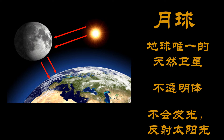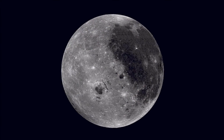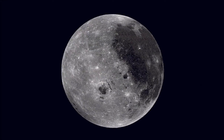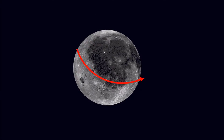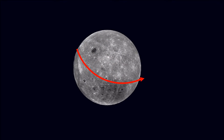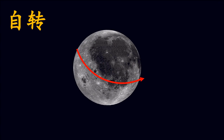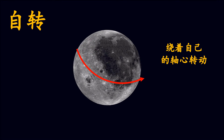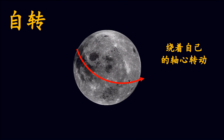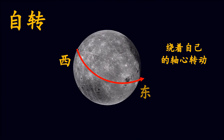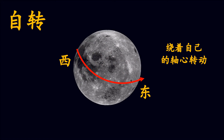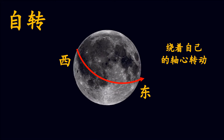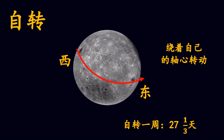接下来让我们透过以下的影片来学习月球的运转。月球和地球一样会自己转动，所以月球会自转。月球的自转是月球绕着自己的轴心转动，由西转到东，逆时针的方向运转。月球自转一周需要花的时间是27又三分之一天。(Next, let's learn about the Moon's movement through the following video. The Moon rotates on its own axis, from west to east in a counterclockwise direction. One full rotation takes 27⅓ days.)